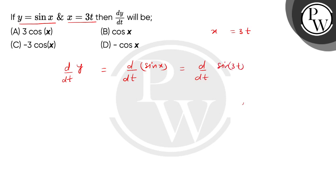So now we will apply the formula here. d/dx of sine ax is equal to a cos ax. So we will get 3 cos 3t.